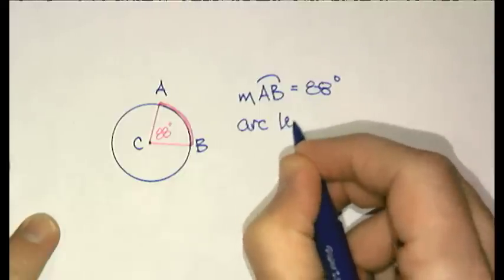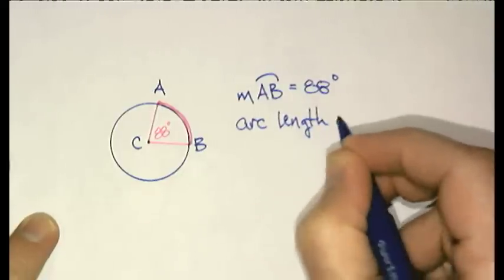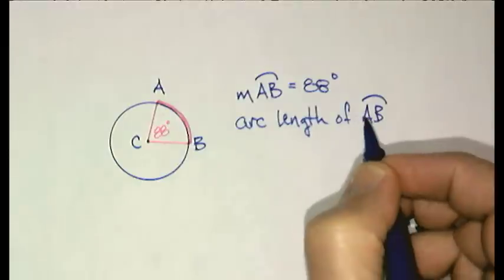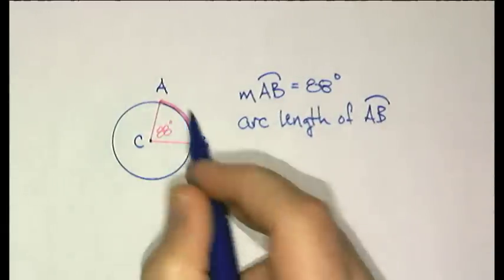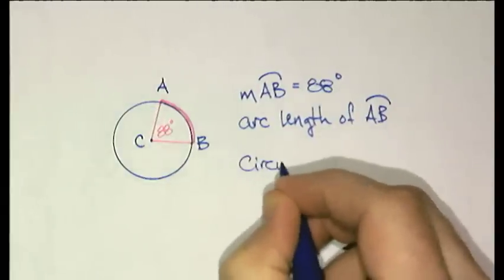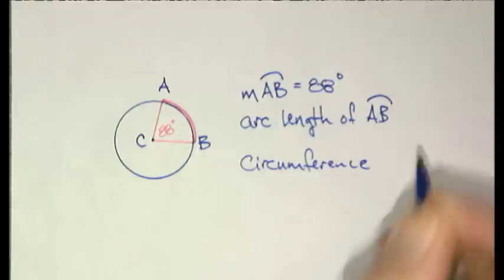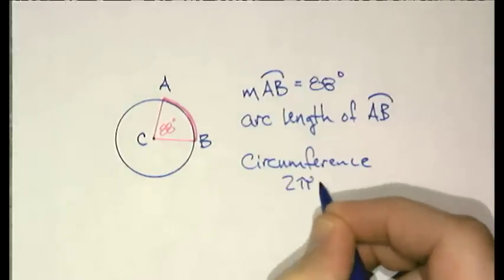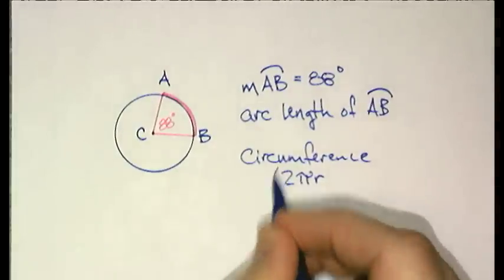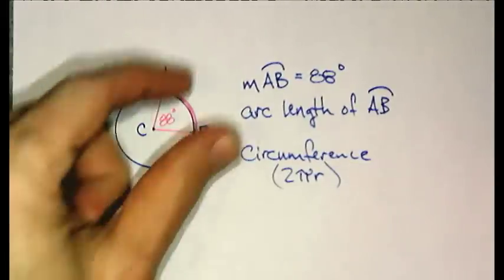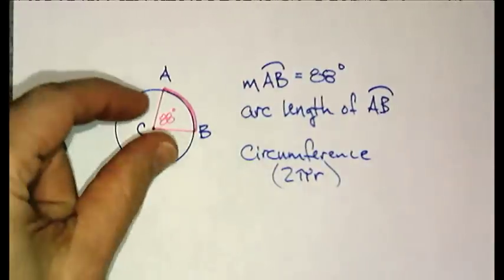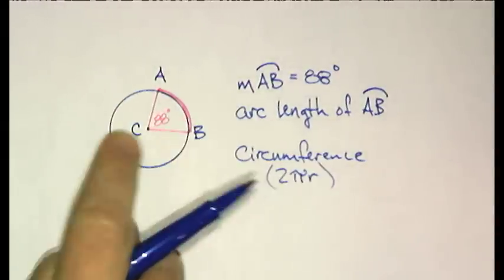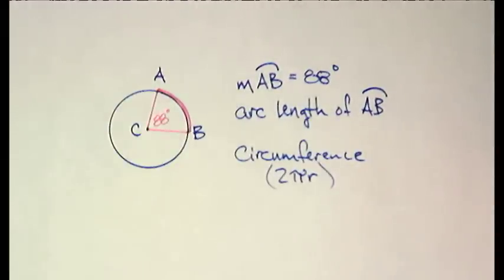Arc length of AB, the way we find that is we need some portion of the circumference. Well, the circumference is 2πr. We just did that. Now, we also need what portion of it? Well, the portion of it is just that much right there. I want not 360 degrees of it, not 180. I just want 88 degrees. I want some fraction of the circumference.